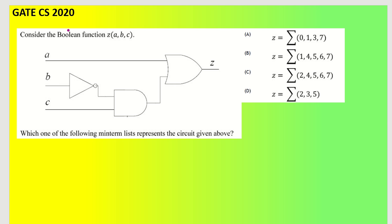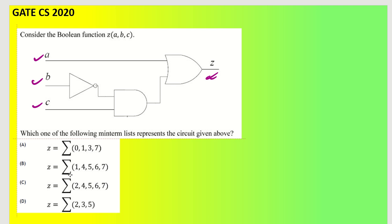The next question was asked in Computer Science 2020. Consider the Boolean function Z of A, B, C with three inputs. We need to identify which minterm representation represents the circuit. First, let us find the output Z. This is going to be B̄ from one gate and B̄C from another, so Z = AB̄ OR B̄C through an OR gate, giving Z = AB̄ + B̄C.